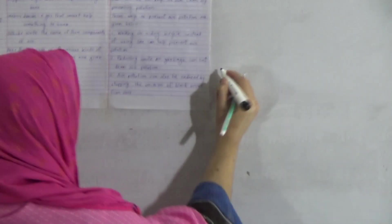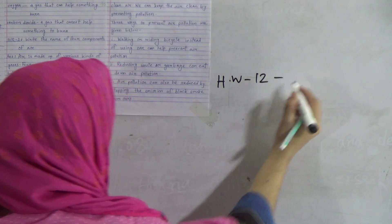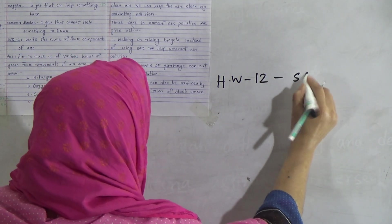My dear students, today's class work number is 12. Do the short question and broad question answer as class work and submit it on Saturday. I hope all of you have understood today's topic properly. Memorize the word meanings, short question answers, and broad question answers. Do the work properly and submit it on Saturday. Take preparation for your half-yearly examination. See you again in the next class. Allah Hafiz.